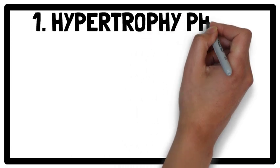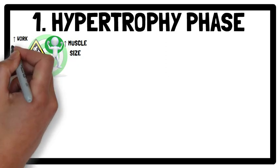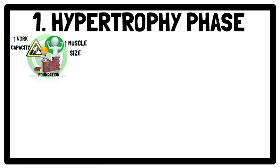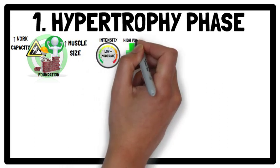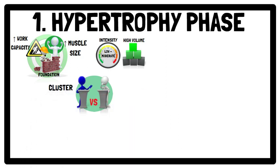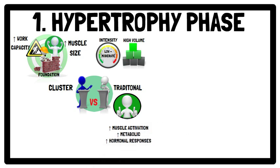The aim of the hypertrophy phase is to increase muscle size, increase work capacity, and provide a foundation for higher intensity work in future training phases. To achieve these goals, a hypertrophy training programme typically involves low to moderate intensities and higher overall volume compared to other training phases. Traditional sets may be preferred over cluster sets, as previously published literature has demonstrated greater muscle activation, metabolic, and hormonal responses for traditional sets compared with cluster sets.